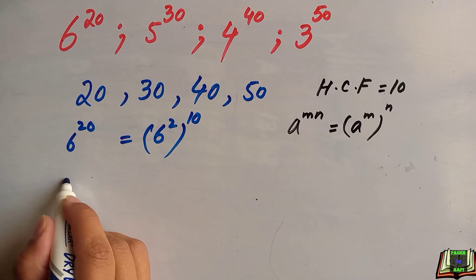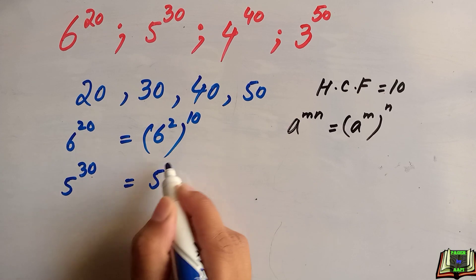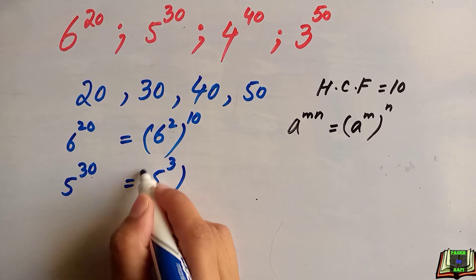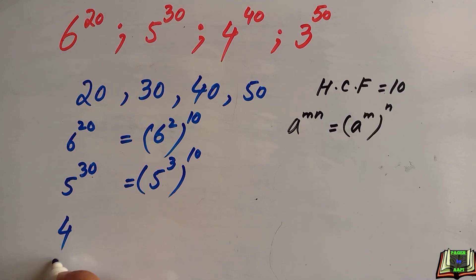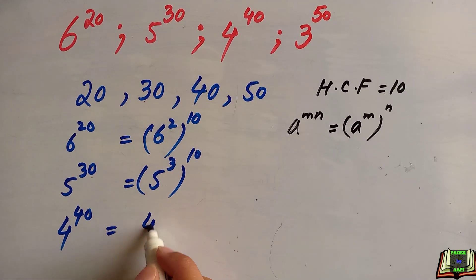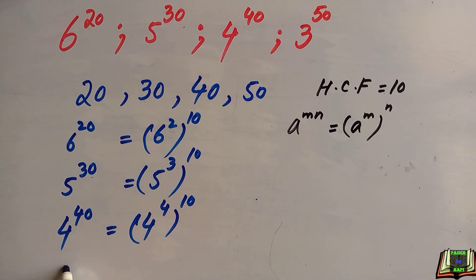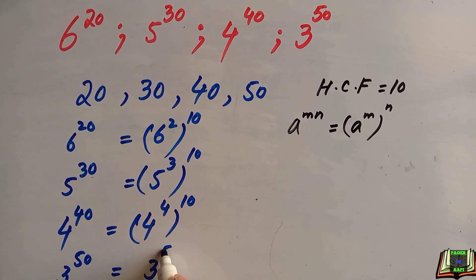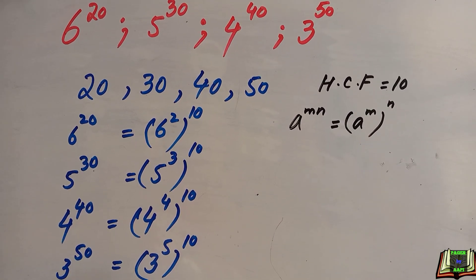5 to the power 30 can be written as (5 to the power 3) whole to the power 10. 4 to the power 40 as (4 to the power 4) whole to the power 10. And 3 to the power 50 is equal to (3 to the power 5) whole to the power 10.